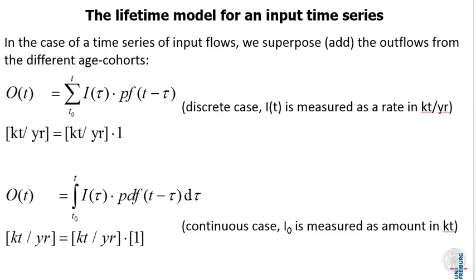If we now have not a single input pulse but a time series, we are back to our old age cohort consideration. What I do is, if the stock responds linearly, and all the stocks that we usually treat in dynamic MFA do that, I can just take the output pulses from the discrete inflows and sum them all up. I take each individual inflow, measured in kilotons per year, multiply with the respective probability of leaving at time t, and sum up over all the different inflow times, which are here labeled as tau.